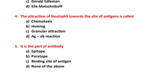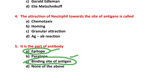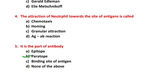Next, question number 5: It is the part of the antibody. Option A: Epitope. Option B: Paratope. Option C: Binding site of antigen. The right answer is B, paratope. Note that epitope is the binding site of the antigen, while paratope is the part of the antibody.